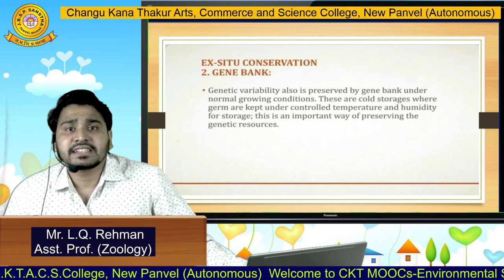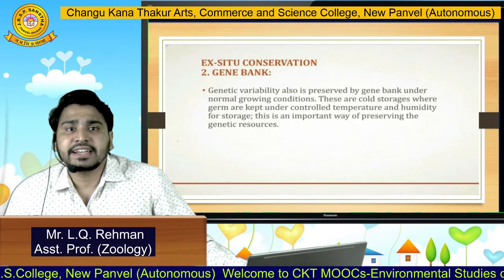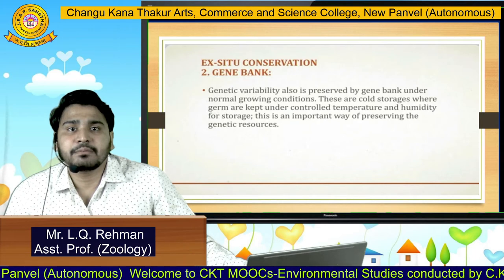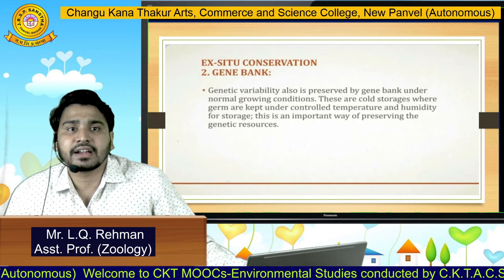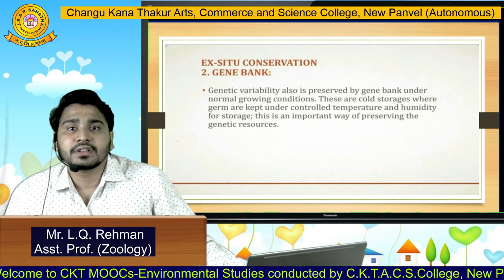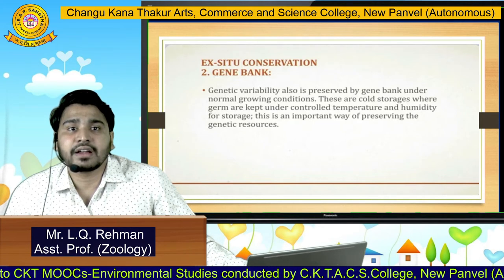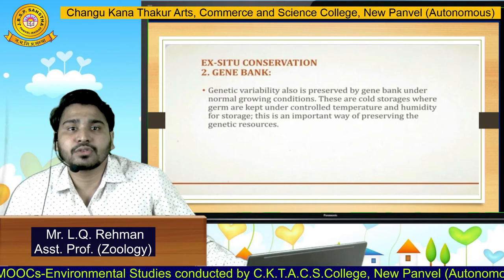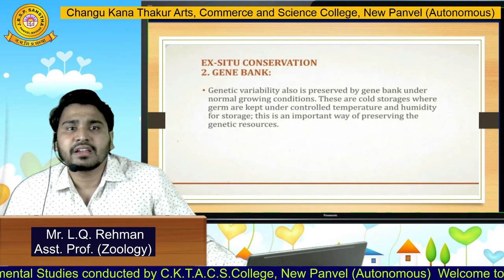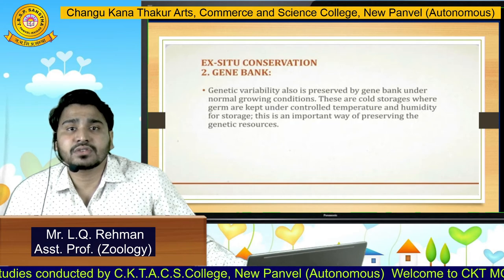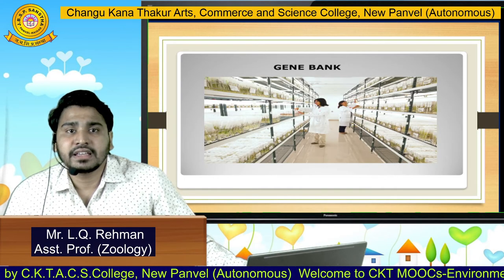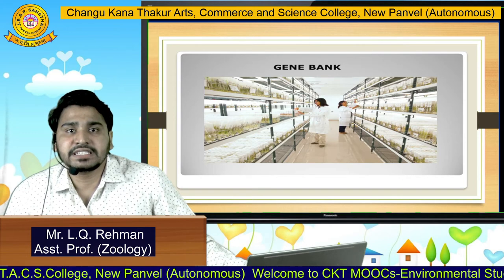Next is the Gene Bank. Genetic variability is also preserved by gene banks under normal growing conditions. These are cold storage facilities where germ cells are kept under controlled temperature and humidity for storage. This is a very important way for preserving genetic resources.